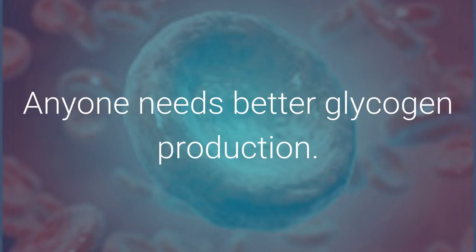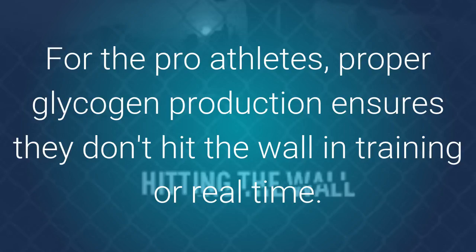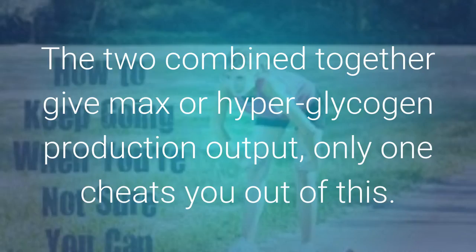Anyone needs better glycogen production. For any person, proper glycogen levels keep you healthy. For pro athletes, proper glycogen production ensures they don't hit the wall in training or real time. This is why both lymphology and rebounding are essential and correct. The two combined together give max or hyperglycogen production output. Only one cheats you out of this.